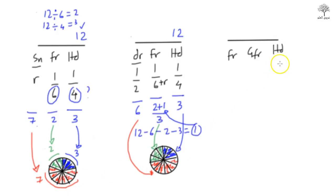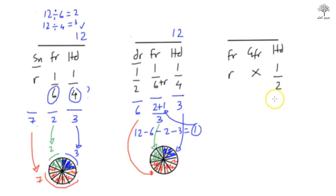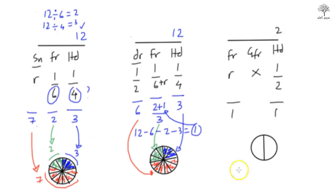Next example: husband — because there are no children involved, he gets half. Grandfather — remember, when the father is present, the grandfather gets nothing; he is mahjub, prevented. Father gets the remainder. Start from 2: give 1 to the husband and 1 to the father. Split the cake into 2 pieces — half goes to the husband, half goes to the father.